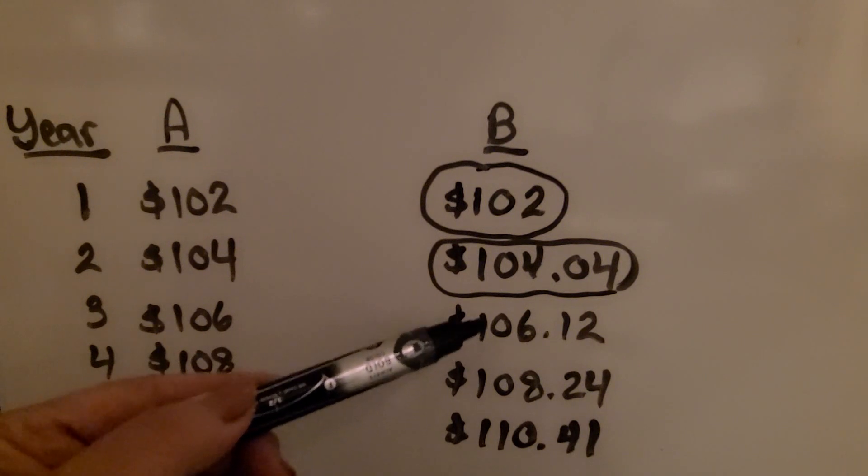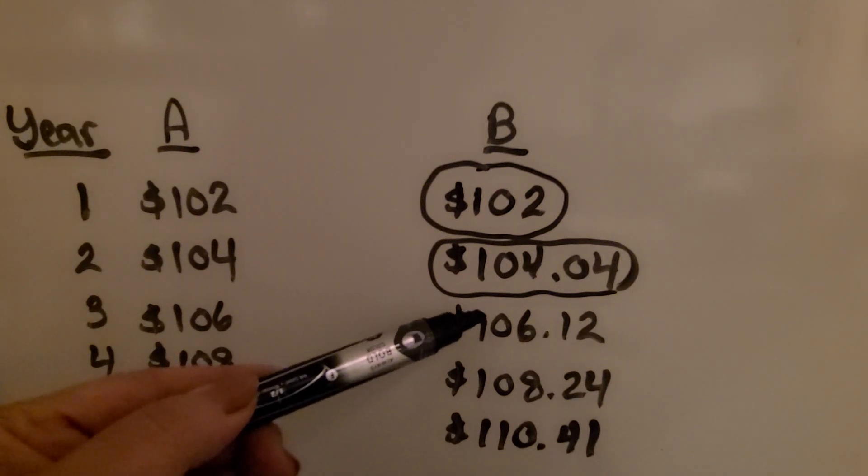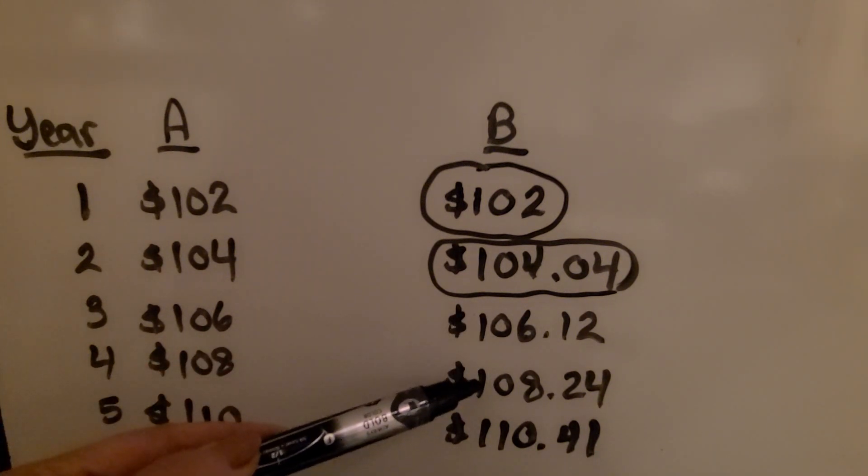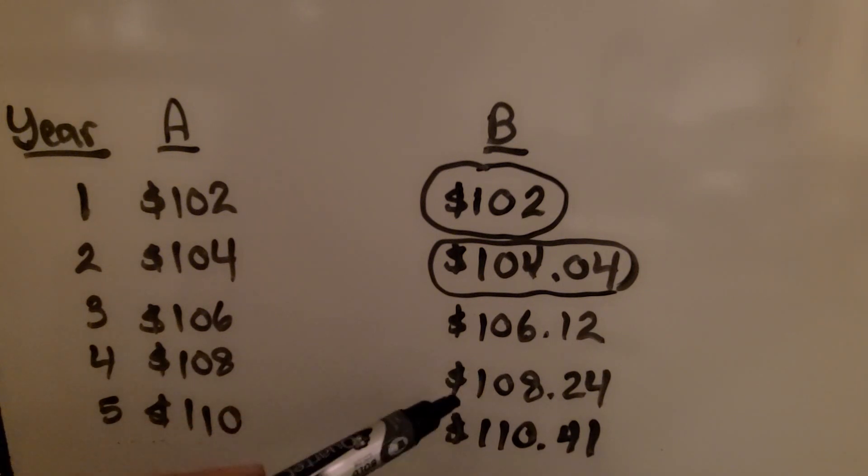For this year, we find 2% of $106.12, which gives us $108.24. Then we find 2% of this amount. This one just keeps doing 2% of $100 and keeps adding that $2 each year.